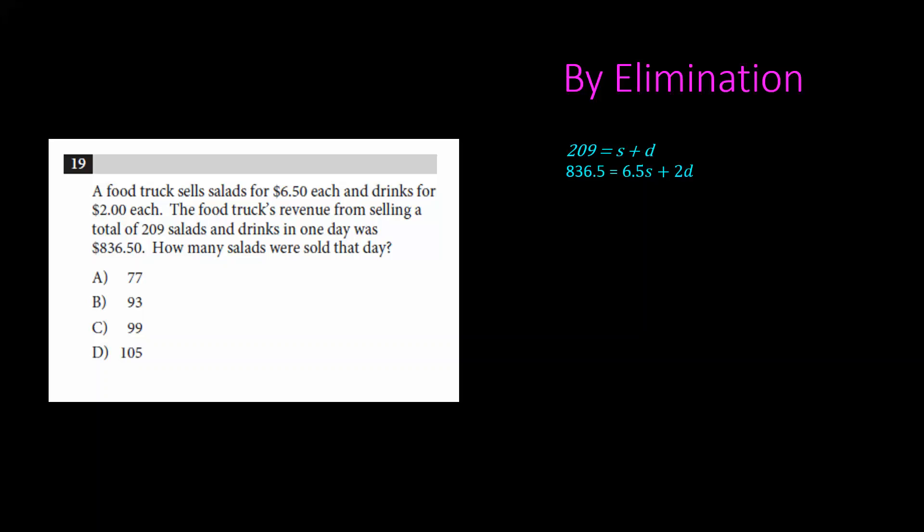To accomplish this, we notice that we can multiply the first equation by 2 and subtract it from the second equation. If we do that, multiply everything in the first equation by 2, we have 418 on the left side is equal to 2S plus 2D. Now we can subtract this from the second equation, and we notice that the Ds cancel out exactly. So here we have 418.5 on the left side equal to 4.5S on the right.